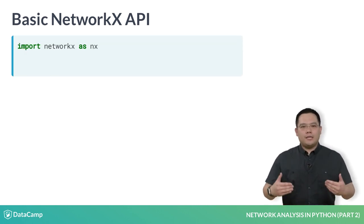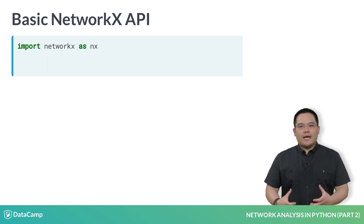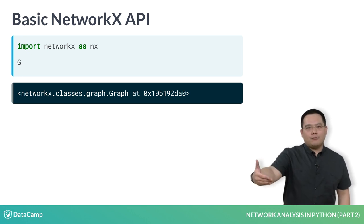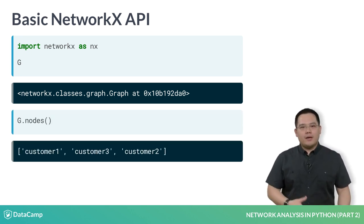As always, we must first import NetworkX into our Python session. Suppose we had a graph G that already exists in memory. If I want to know how many nodes exist in that graph, I can call on G's method .nodes, which will return a list of every node in the graph. The analogous method .edges also exists.